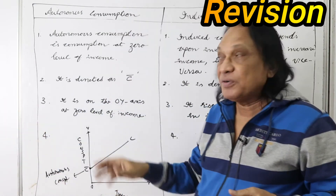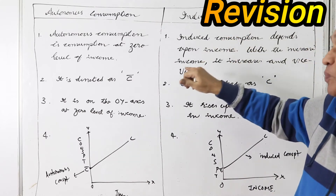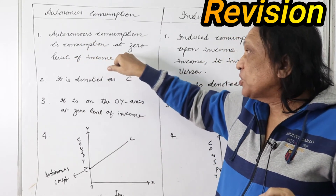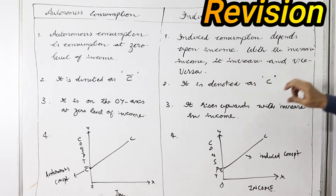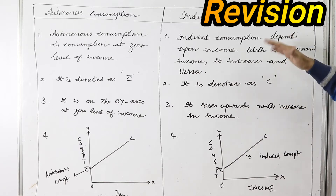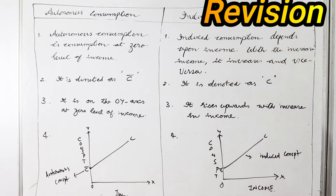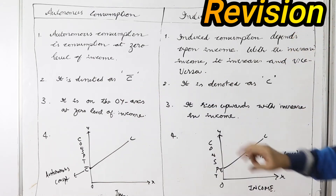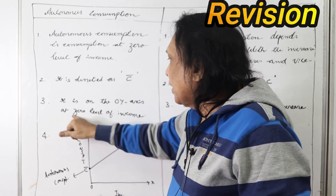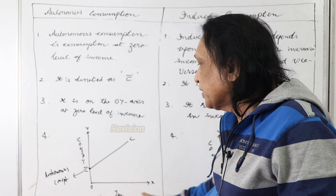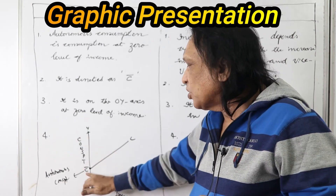Now let's see the difference. Distinguishing between autonomous and induced consumption: first, autonomous consumption is consumption at zero level of income; induced consumption depends upon income — with increase in income it increases, and with fall in income it falls. Second, autonomous consumption is denoted as C bar; induced consumption is denoted as C. Autonomous consumption is shown on the OY axis at zero level of income — on the X axis we have income, on the Y axis we have consumption. At zero level of income, C bar is always there, whether income goes up or comes down.